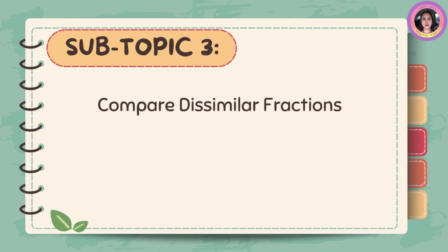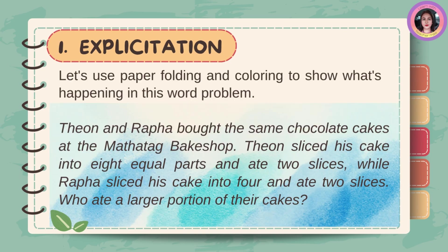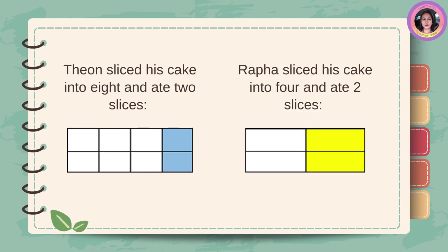Compare the similar fractions. Let's use paper folding and coloring to show what's happening in this problem. Theon and Rafa bought the same chocolate cakes at the Matatag Bake Shop. Theon sliced his cake into 8 equal parts and ate 2 slices, while Rafa sliced his cake into 4 and ate 2 slices. Who ate a larger portion of their cakes?